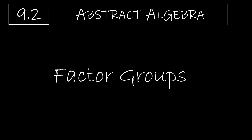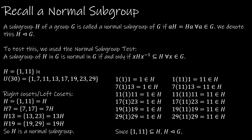In this video, we're going to take a look at factor groups. Quick recap of a normal subgroup: a subgroup is considered normal if AH equals HA for all A in G, which means the left cosets are equal to the right cosets.